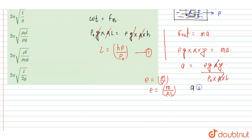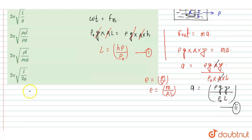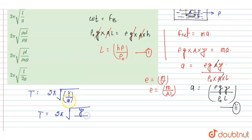After cancelling area, the acceleration equals rho times G times Y upon rho naught times L. The time period is T equals 2 pi times the square root of displacement Y upon acceleration, which gives T equals 2 pi times square root of rho naught times L upon rho times G. Substituting L equals H times rho upon rho naught, we get the final time period.